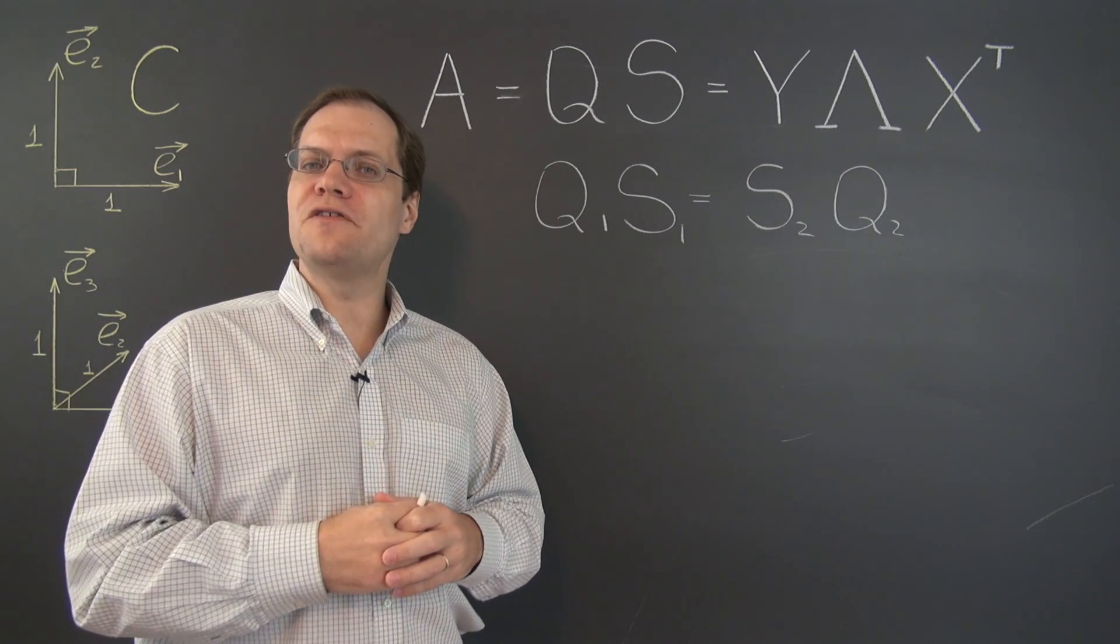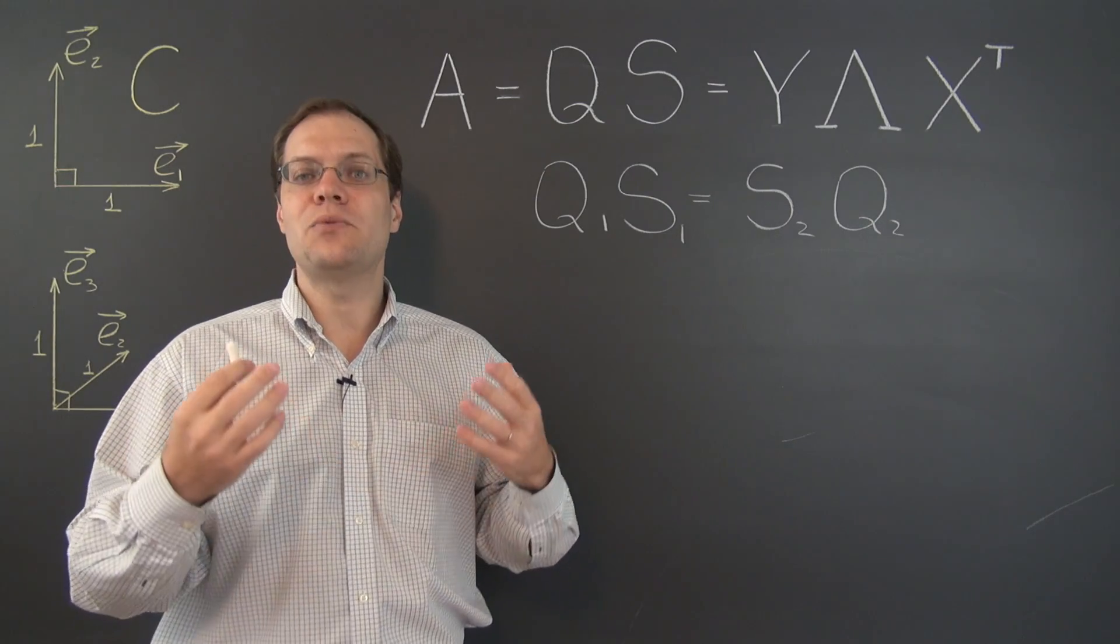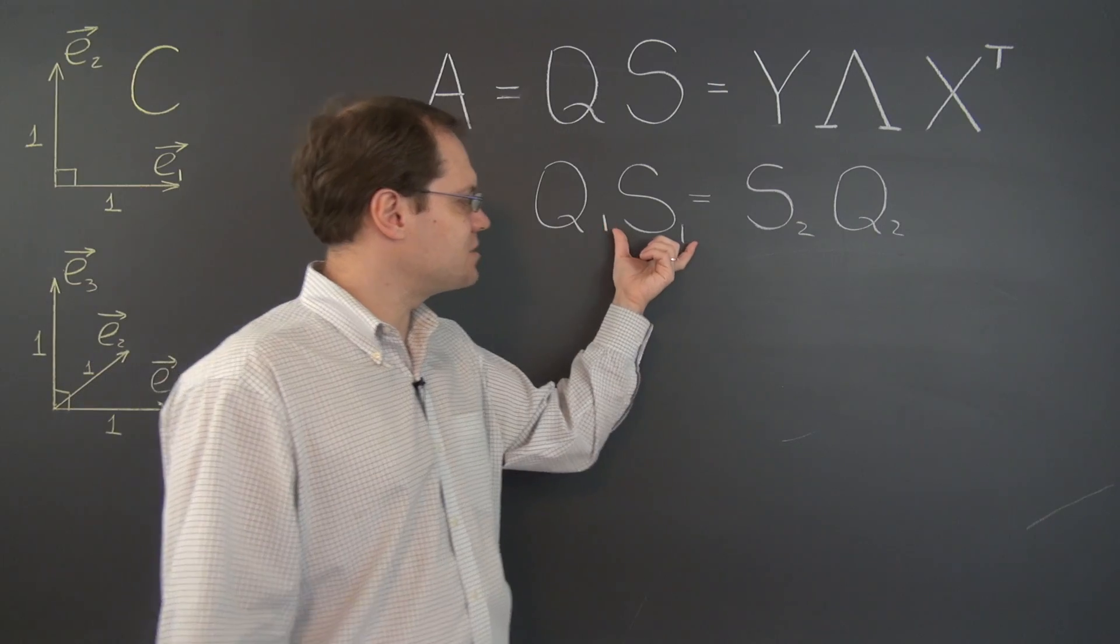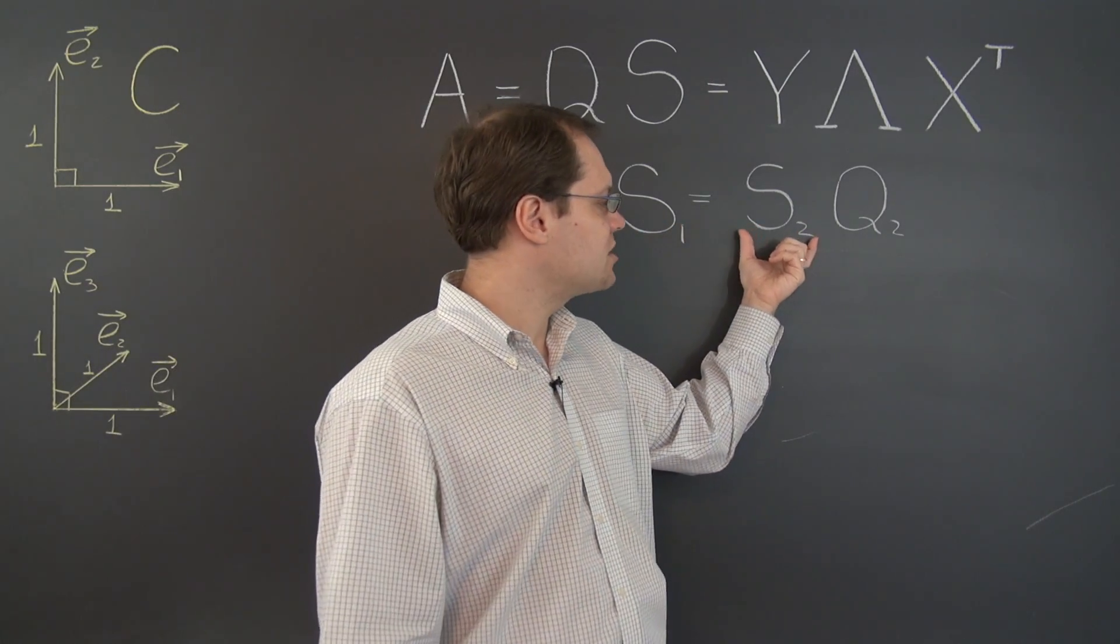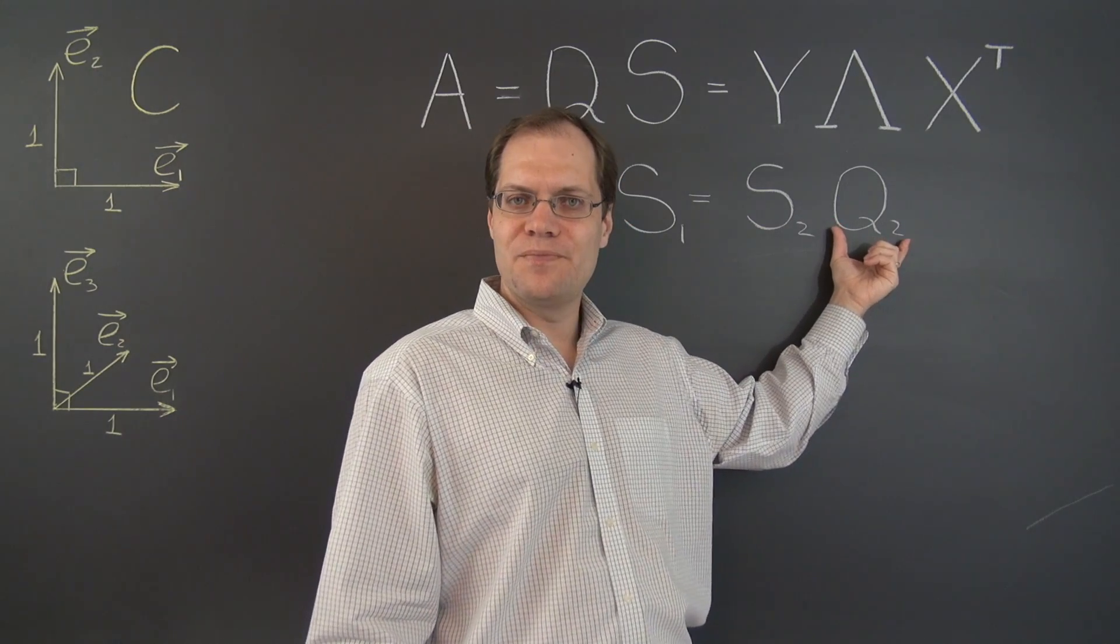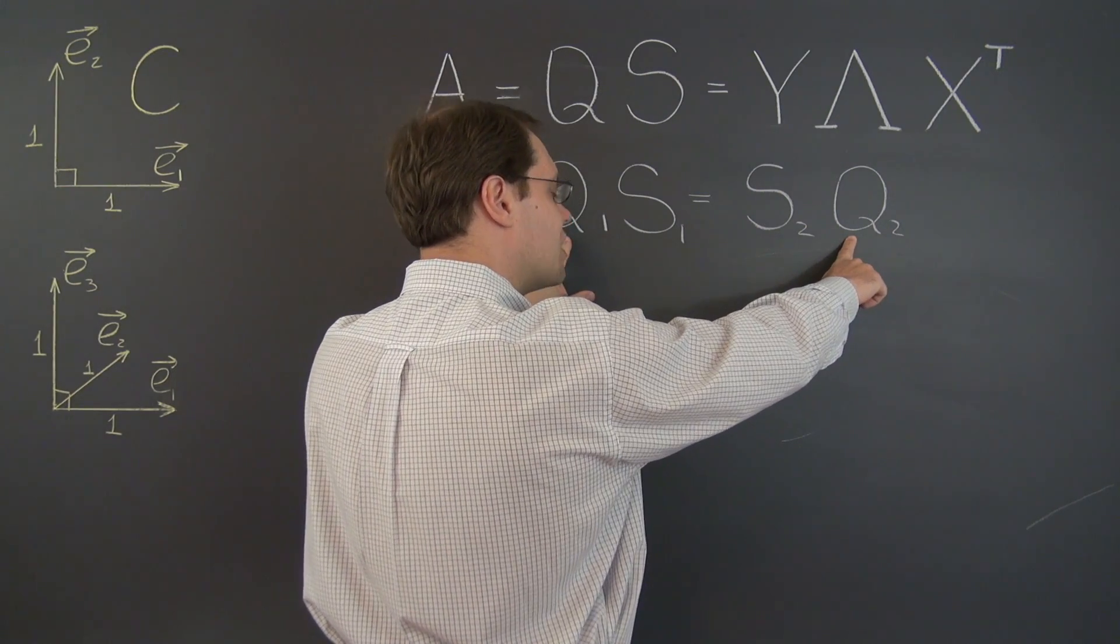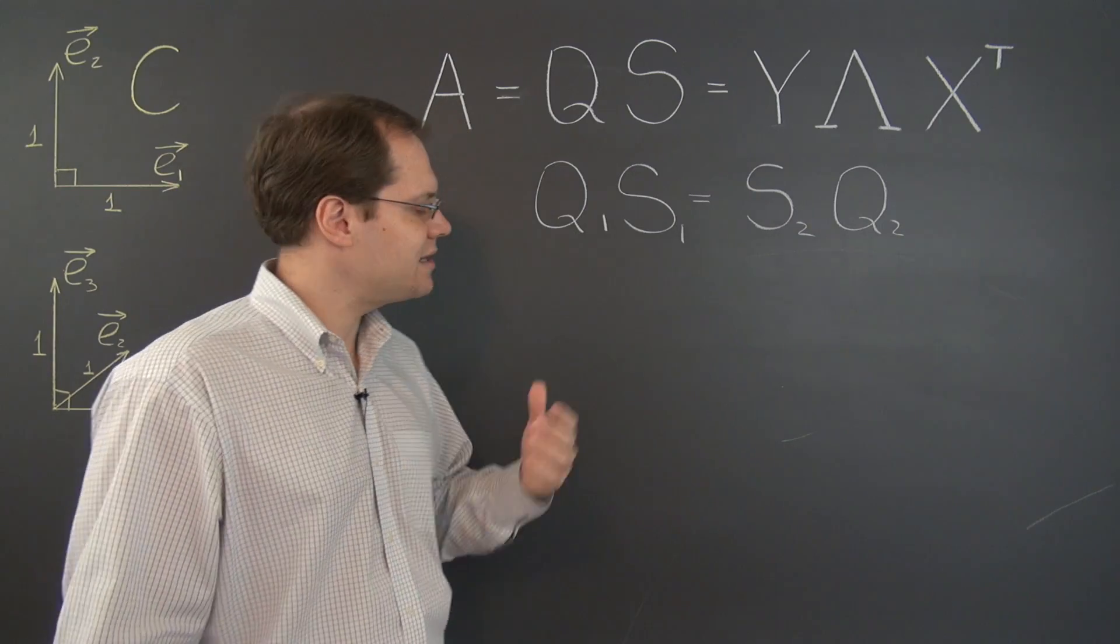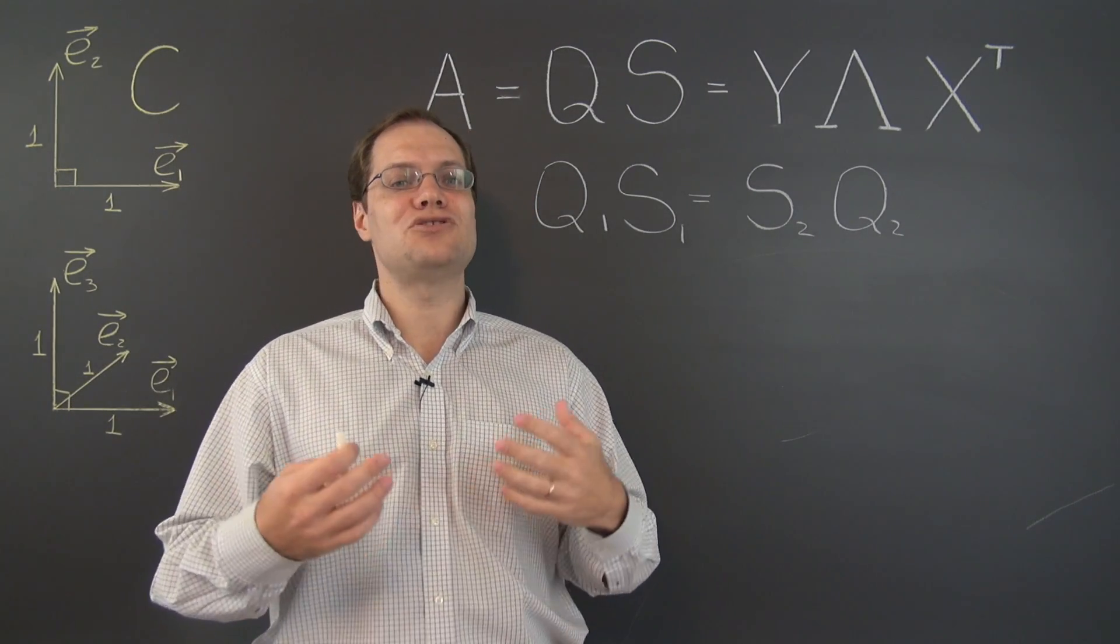In this video, I will give you the proof of a fact that we actually discovered experimentally: that when you decompose a matrix as a product of an orthogonal and a symmetric matrix, or the same kinds of matrices but in the opposite order, symmetric times orthogonal, perhaps surprisingly, the resulting orthogonal matrices are the same matrix. There was no reason to assume something like that because matrices don't commute in products, but it's actually true.